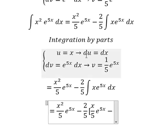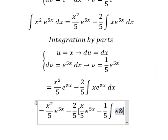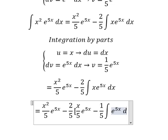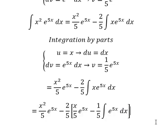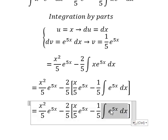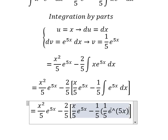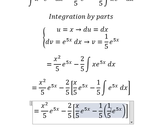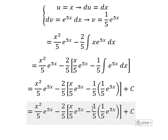So we have u multiplied by v minus the integration. We have 1 over 5, and now we have the integration e to the power of 5x. So the integration of this one gives us 1 over 5 e to the power of 5x. And 1 over 5 with 1 over 5 gives us 1 over 25.